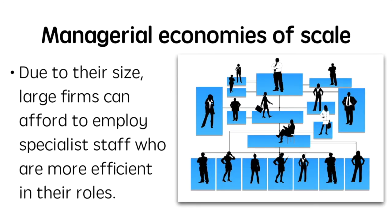Larger firms can afford to employ specialist staff as the gains the employee would generate offset their significant costs. A small mom-and-pop restaurant owned by a married couple that sells sandwiches and drinks is unlikely to be able to afford a marketing executive — the expense is great and there's only so much the executive could assist with in growing their small business. However, a global fast food outlet such as KFC would greatly benefit from such an employee, as the impact their work would have would more than offset the cost of hiring them. Thus the firm can benefit from managerial economies of scale.